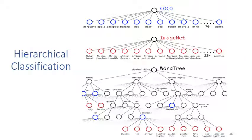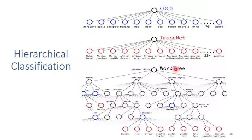YOLO v2 also adopts a hierarchical classification method to classify 9,000 classes. We humans naturally use taxonomy to classify animals. There are 22,000 objects in ImageNet and around 70 in the COCO dataset. We can build a WordNet tree — a hierarchical classification. We first classify objects into animal, artifact, natural object, or phenomena. If the object belongs to animal, we can further classify it into cat, dog, or different kinds of cats. This is hierarchical classification.